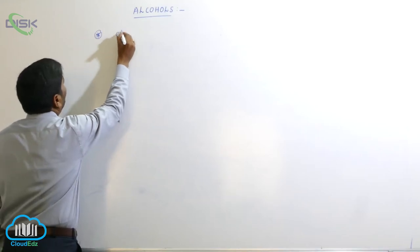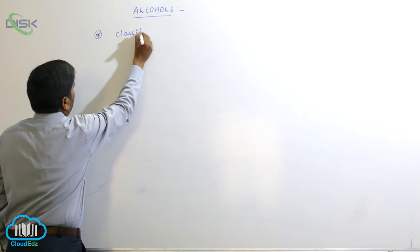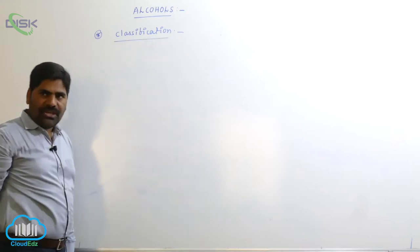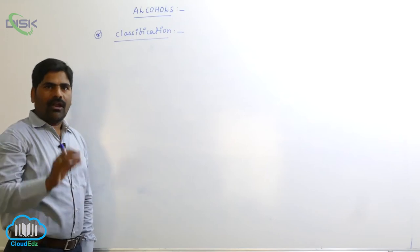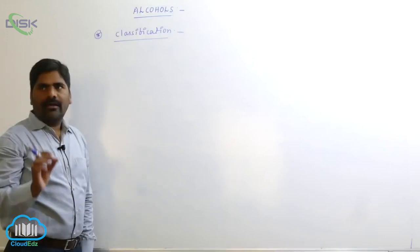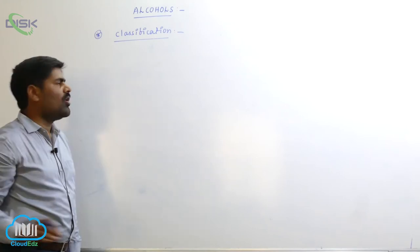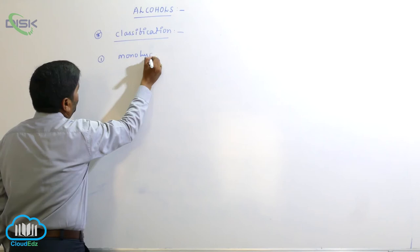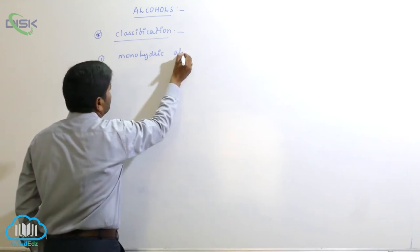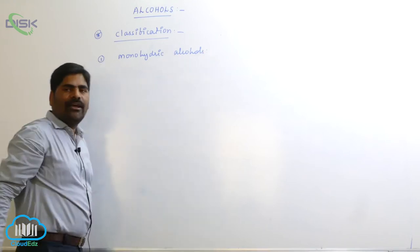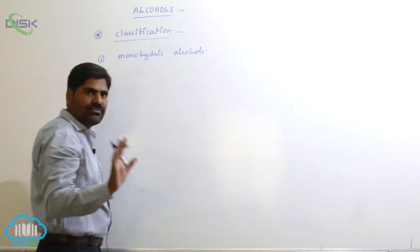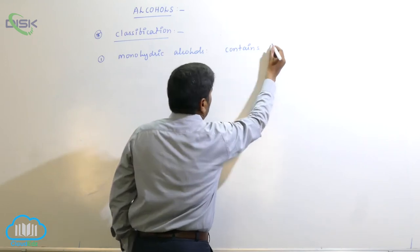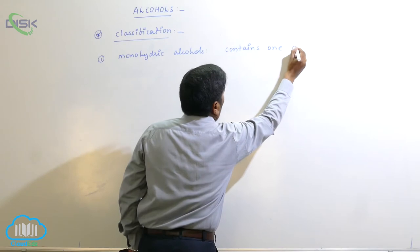The first classification is based on the number of hydroxyl groups. Alcohols are classified into monohydric, dihydric, trihydric, and polyhydric alcohols. Monohydric alcohols contain one OH group.